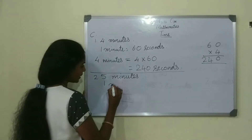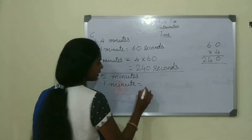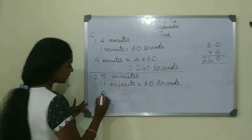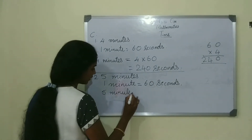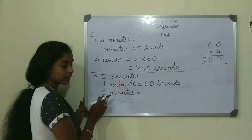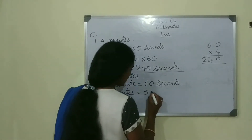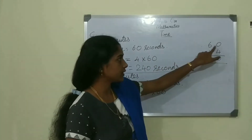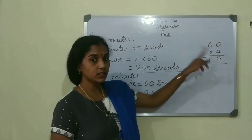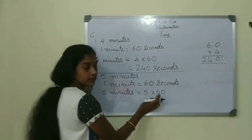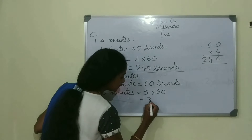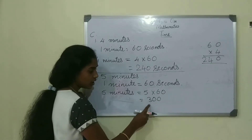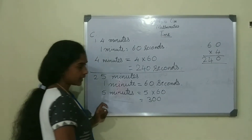5 minutes. 1 minute is equal to 60 seconds. So 5 minutes is equal to 5 into 60. 6 fives are 30, add the 0, so it is 300 seconds.